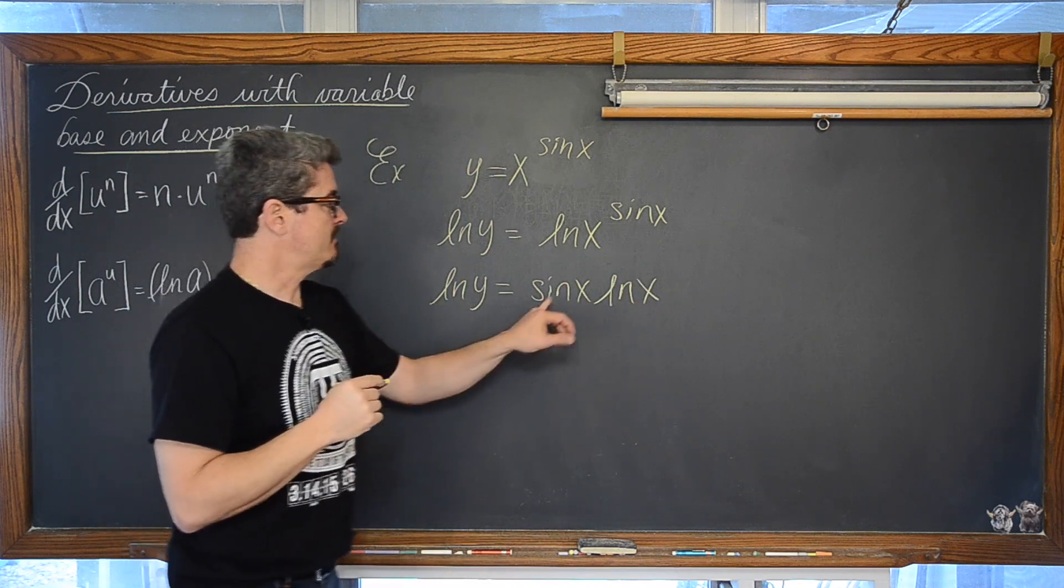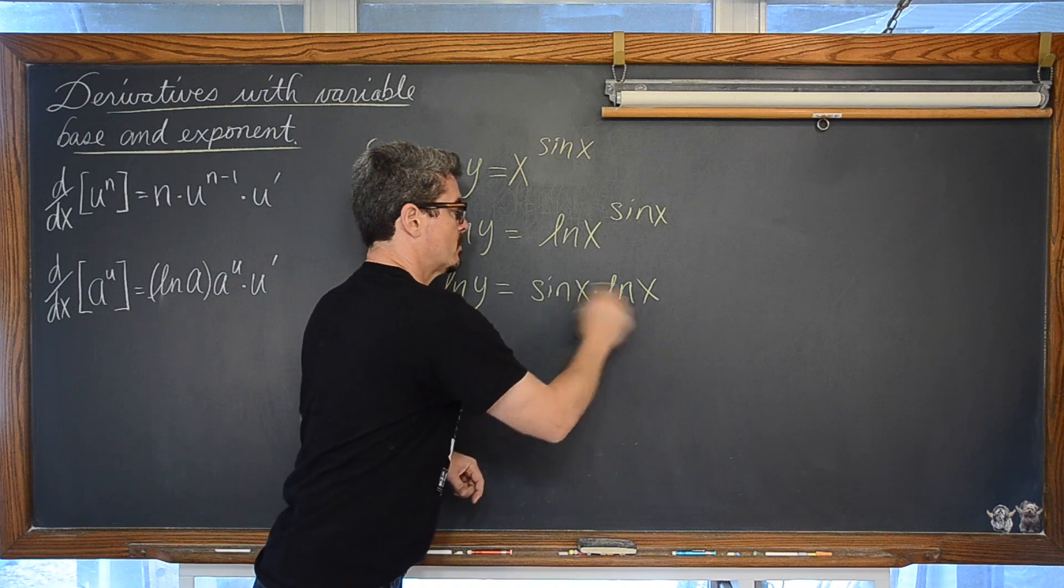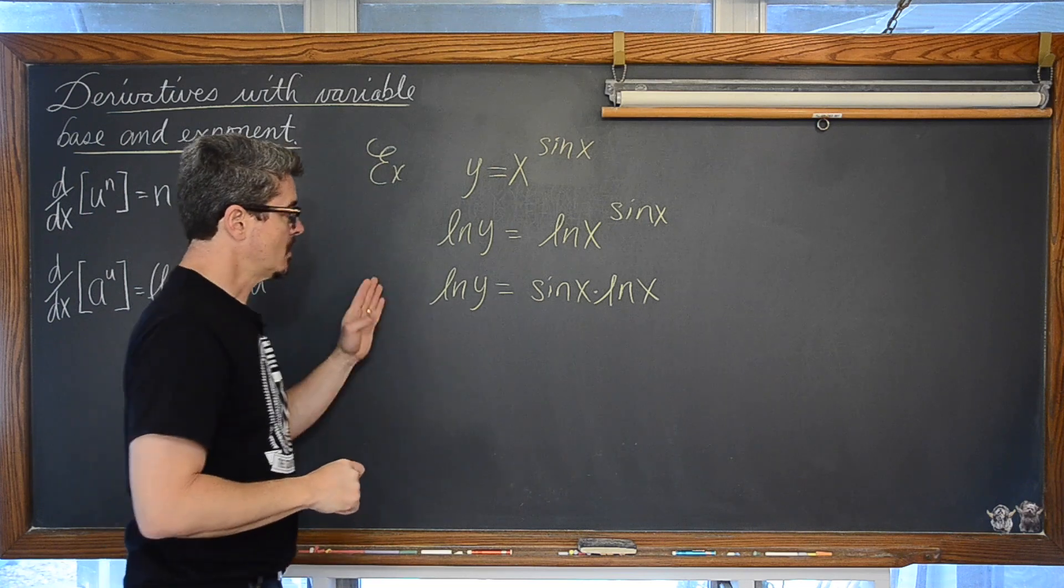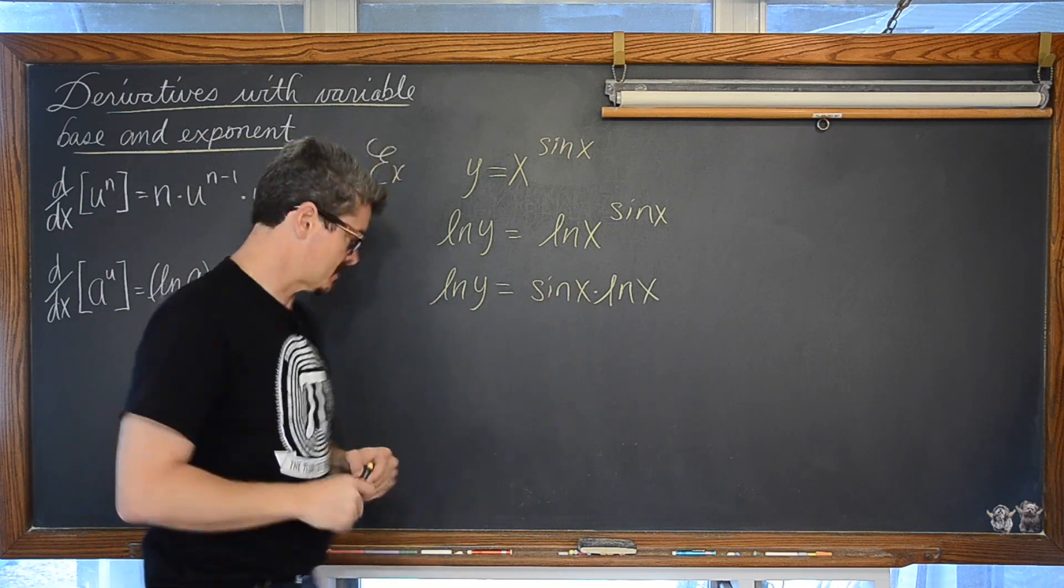And now see we have the multiplication or the product of two functions and then we can go back to using that product rule for taking derivatives. We are going to take the derivative of both sides of this equation implicitly.